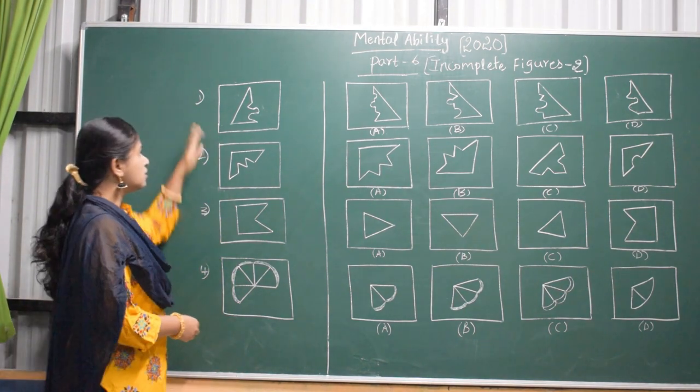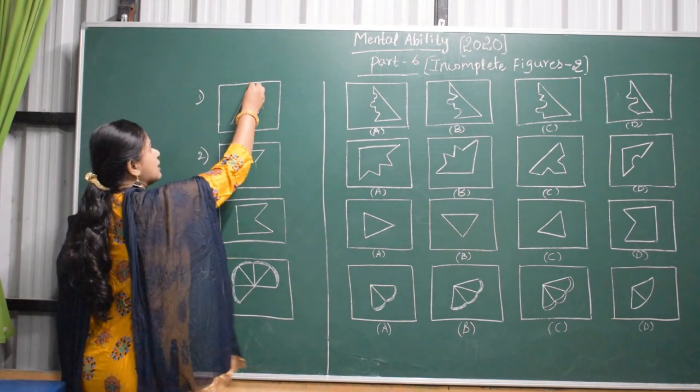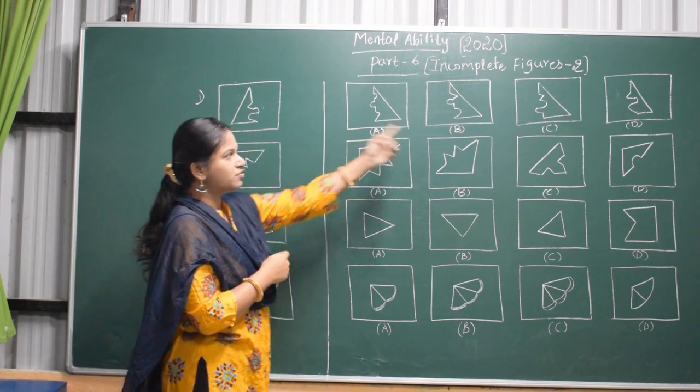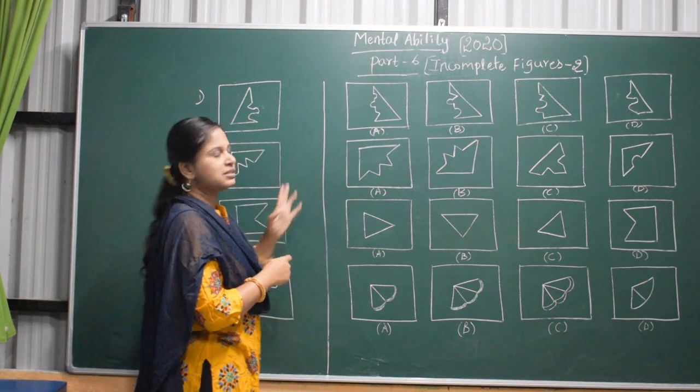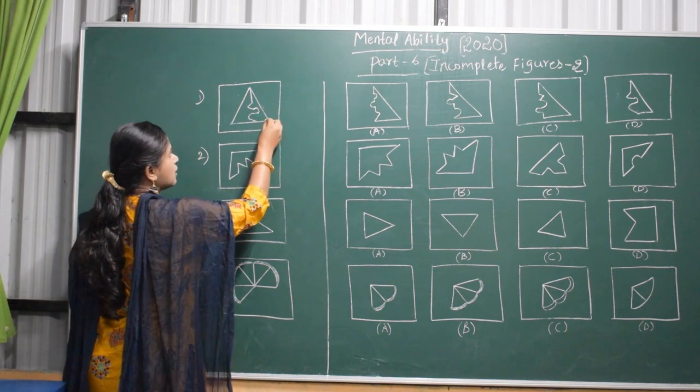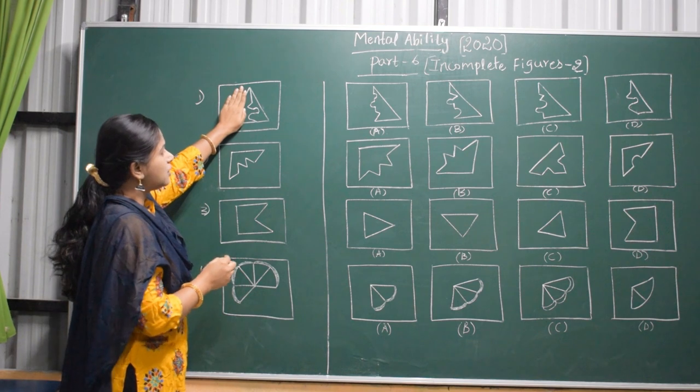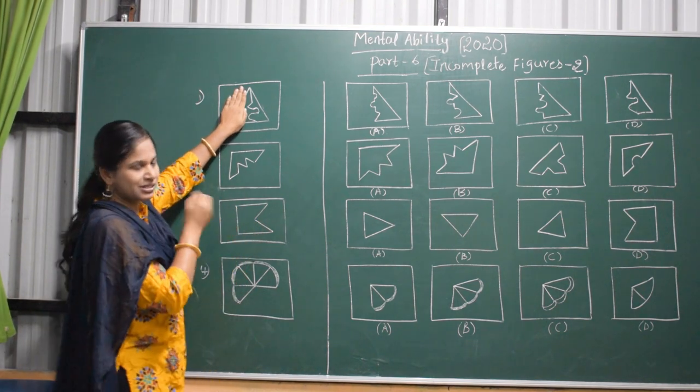We will do the first question. This is a puzzle-type question. We have to draw a line like this. This is the question figure. Among these four, we have to select one answer. You draw like this, then you observe like this. You hide like this and then observe which figure suits this.